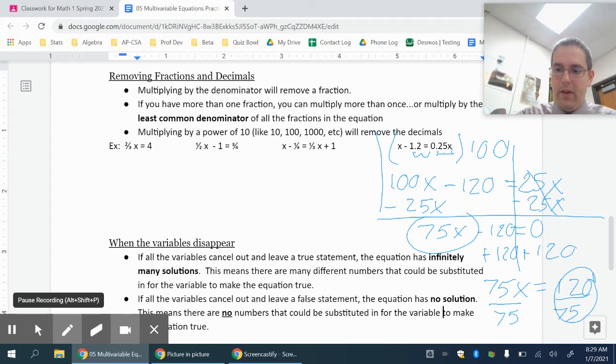I'm going to put this up here. 5 goes into 12 two times with 2 left over. 5 goes into 24 four times. So I have a 24 over 15.